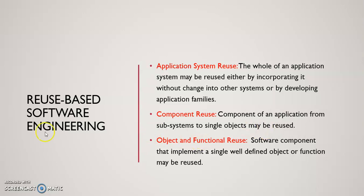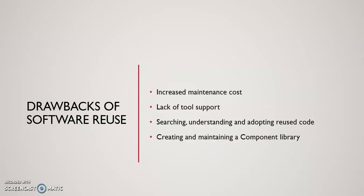Then we have component reuse, where small modules can be used for other projects. Finally, there is object or function reuse, also called unit-level reuse — small units matching the requirements of another project can be used in that particular software. These are the categories of systematic software reuse.